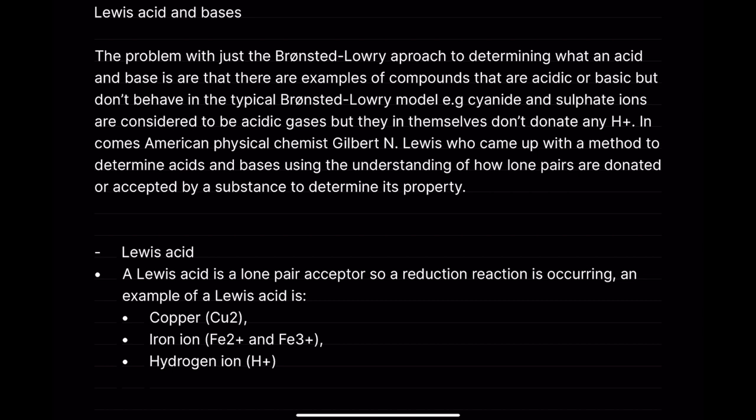American physical chemist Gilbert N. Lewis came up with a method to determine acids and bases using the understanding of how lone pairs are donated or accepted. Instead of using protons, we can use electrons — lone pairs — to determine whether a compound is acting as an acid or a base. There are two models: Bronsted-Lowry and Lewis acids and bases, and both are useful in their own aspects.